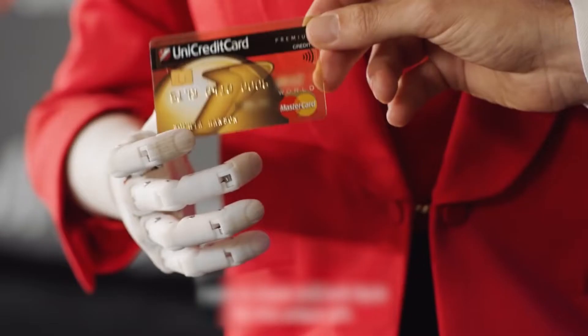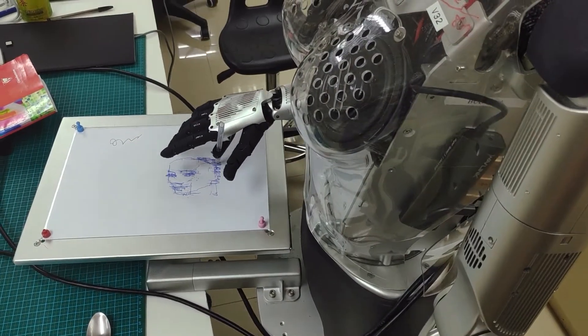Sophia's robotic arms and hands allow her to gesture while she speaks, pick up objects, or even draw with ease.